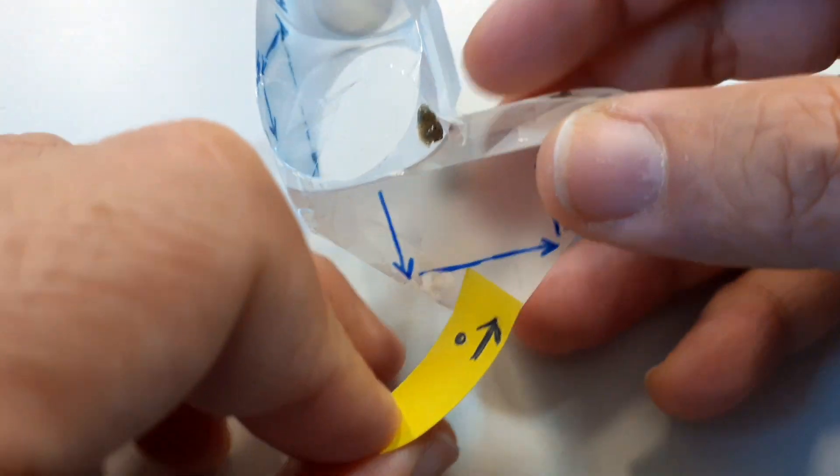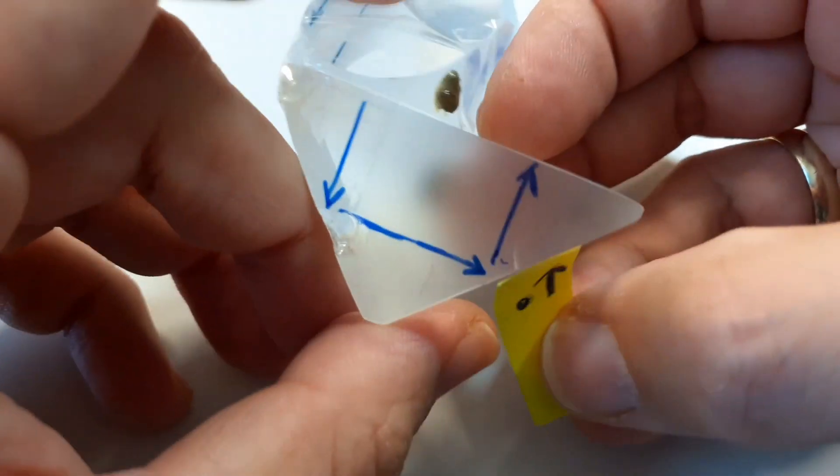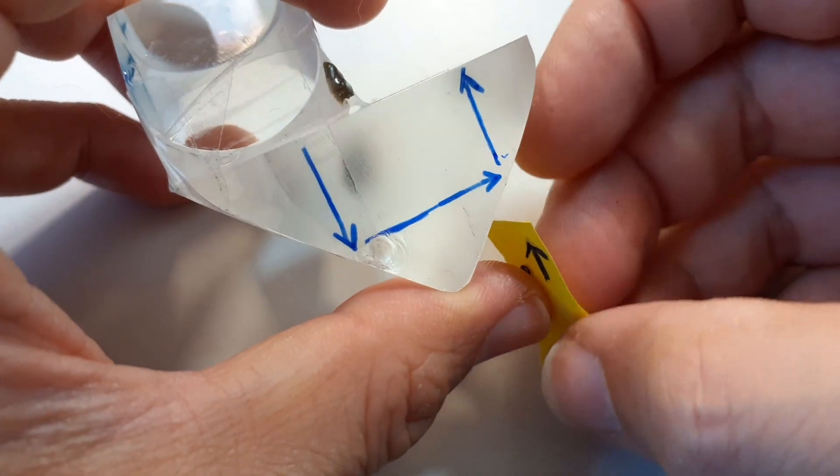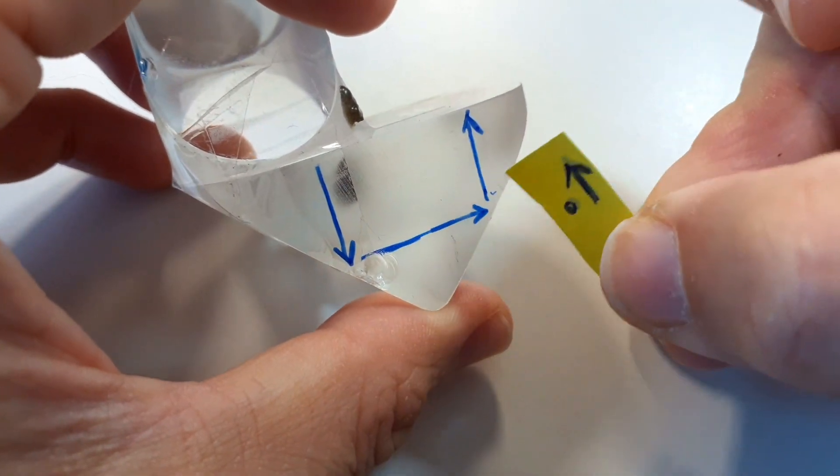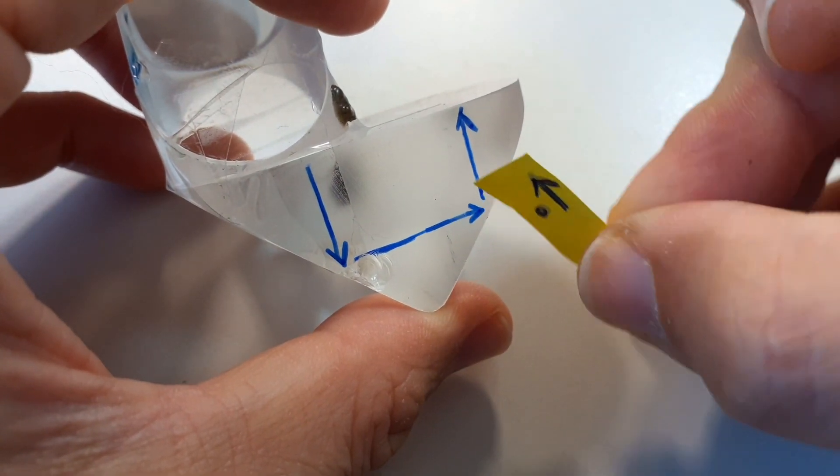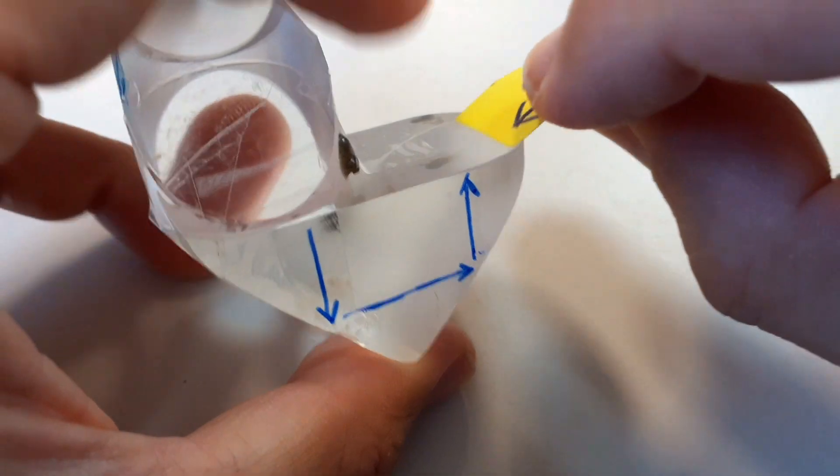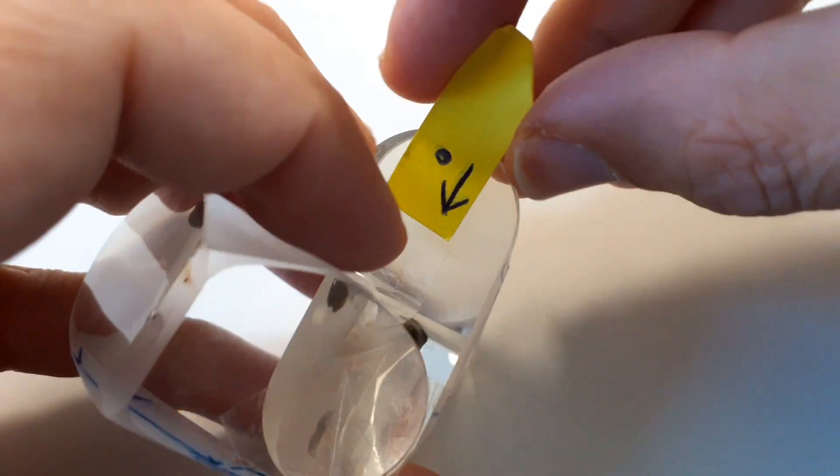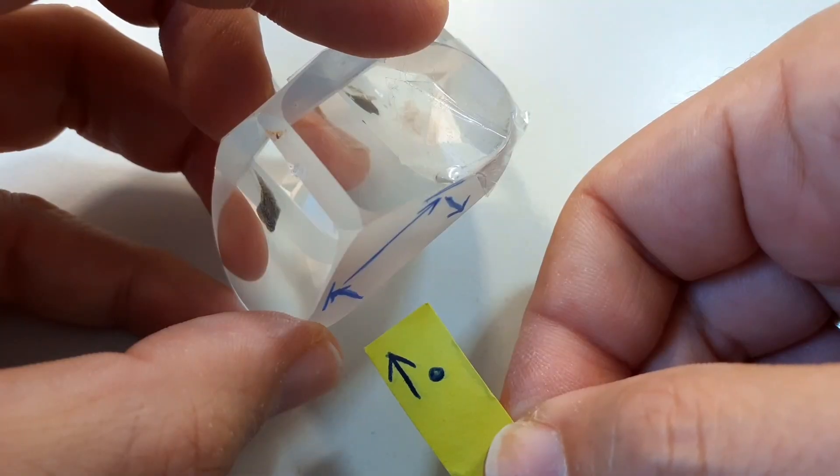And now, because of the second prism, the image is flipped upside down. And you can see that as it exits, it's basically the same. The dot is on the same place as before with the only difference that it's now rotated 180 degrees.